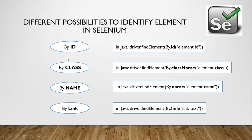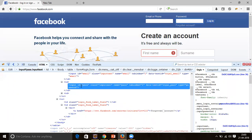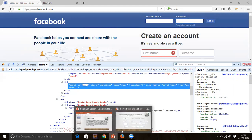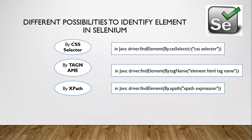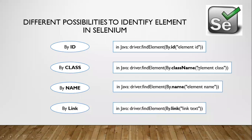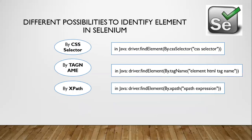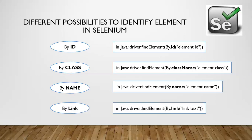If you want to identify any element by its ID, you just need to write that code and change the value. For example, copy the ID string from the input text field in Firebug and pass it into By.id(). Similarly, if the element has a class name, take that class name value and pass it using By.className(). If it has a unique name, pass it using By.name(). If the element has visible text, use By.linkText().